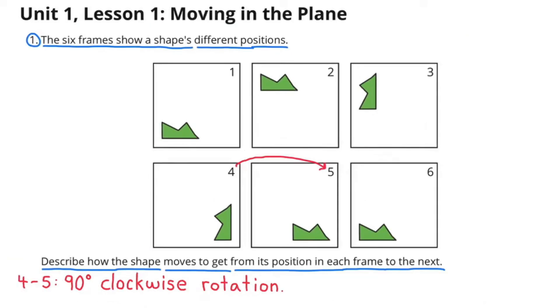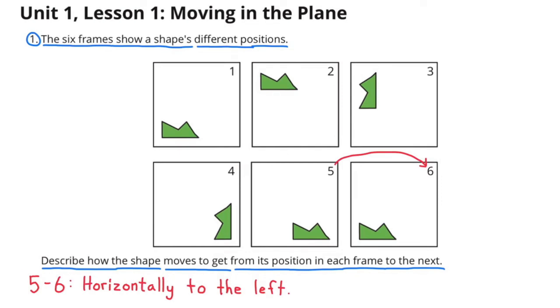From frame 4 to frame 5, the shape rotates 90 degrees clockwise. From frame 5 to frame 6, the shape moves horizontally to the left.